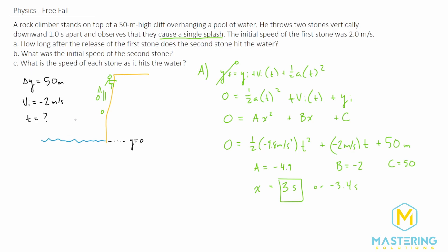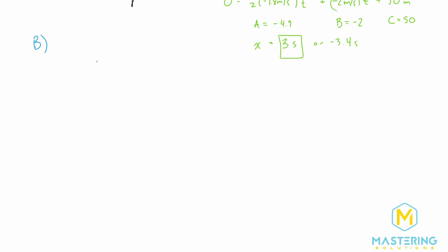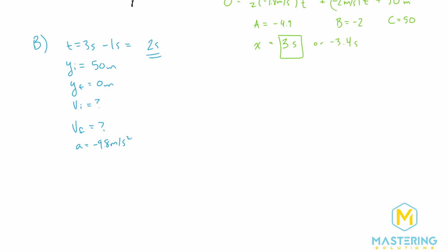For part B, we need to find the initial speed of the second stone. The first stone was in the air for 3 seconds, but the second stone was released one second later, so its time in the air is 3 − 1 = 2 seconds. Y initial is still 50 meters, Y final is 0 meters, velocity initial is unknown, and acceleration is −9.8 m/s².